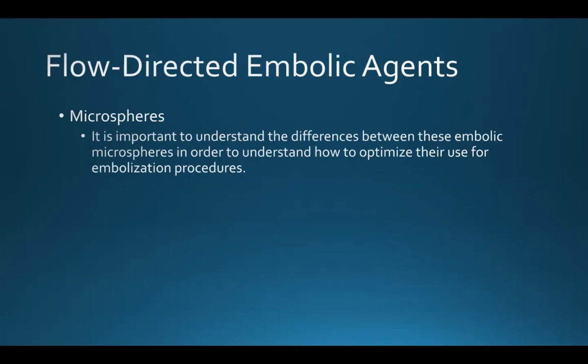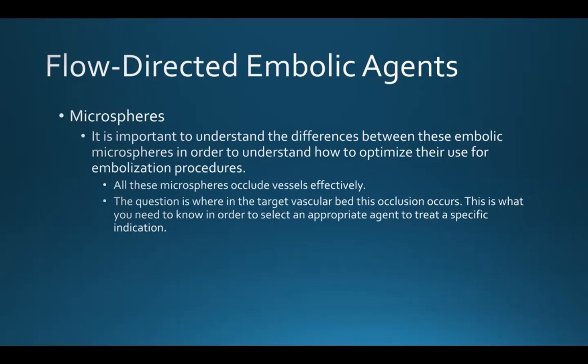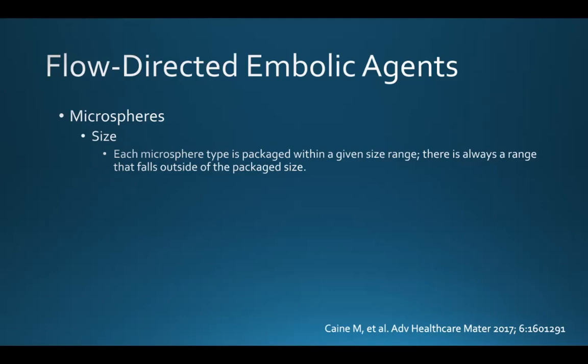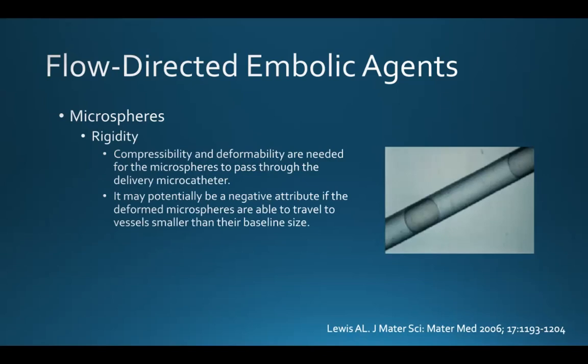It's important for anybody using these microspheres to understand the differences between the products, because that will help optimize their use for embolization procedures. All of these microspheres occlude vessels effectively — the question is where in the target vascular bed this occlusion will occur, and this is what you need to know to select an appropriate agent for a specific indication. The level of occlusion is generally impacted by the size, rigidity, and elasticity of the microspheres. Each microsphere type is packaged within a given size range, so always remember there is a range that falls outside the packaged size.